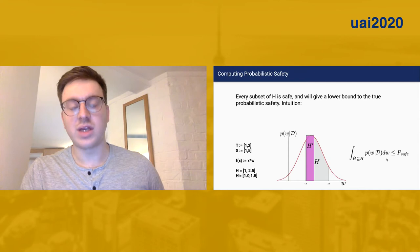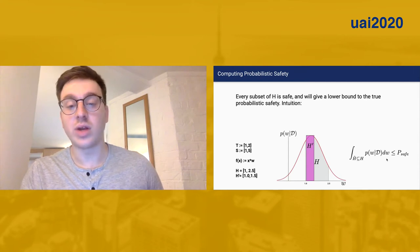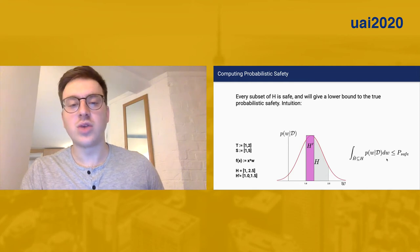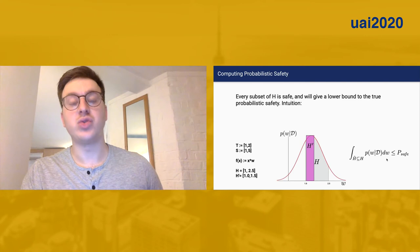To illustrate this, we have a guess at our safe weight interval, which is conservative, so it's between one and one and a half, and we see that integrating over this space would give a lower bound, a safe lower bound to the true probability of safety.